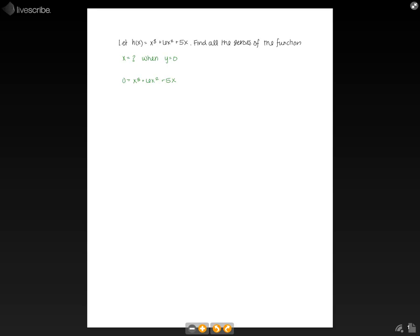So first we need to look for anything we can factor out of all of these. So we can see that we can factor out an x. So step one for us is going to be factor out an x. Once we do that, we're going to get 0 equals x, and then we have to take an x out of every term. So x squared plus 6x plus 5.